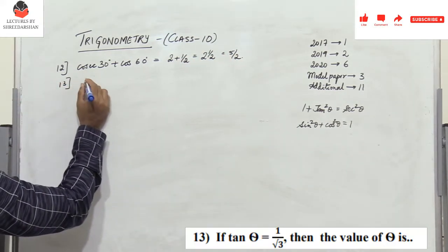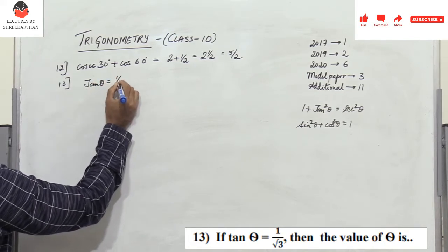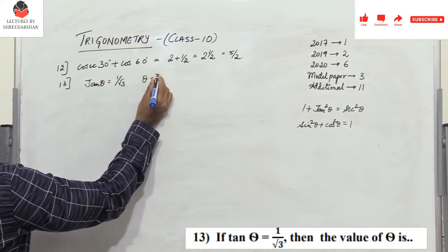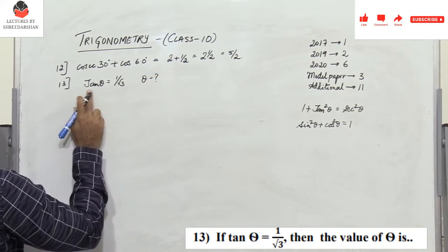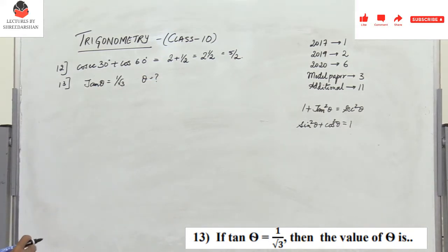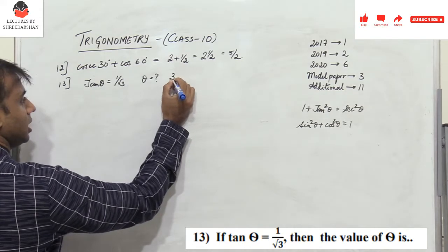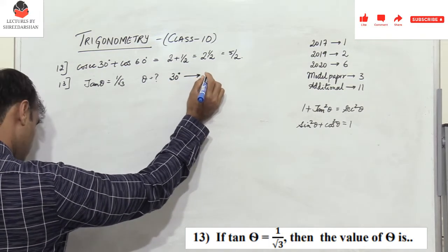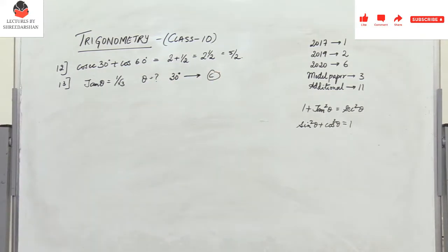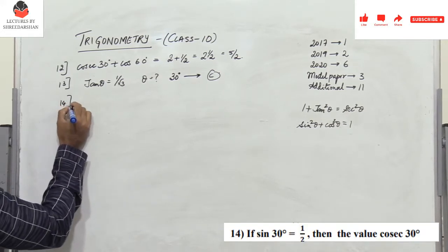Problem 13: if tanθ = 1/√3, what is θ? We know tan30° = 1/√3, so θ = 30°. In the multiple choice, this corresponds to option C.